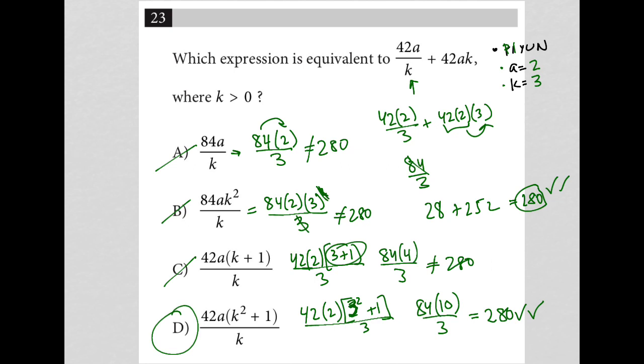So two different methods. The traditional simplification, but then also this plugging your own number. So I think both of them are just as good. You can choose whatever one you like. Again, plugging your own number will typically work whenever there's variables in the question and answers. And simplifying will always work. But the question is if you know how to simplify. So plugging your own number is a great strategy to use when maybe you don't know how to do the traditional math.